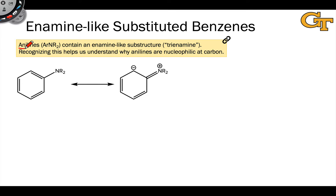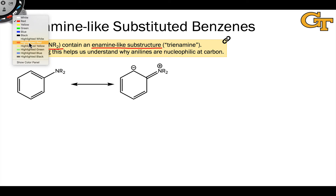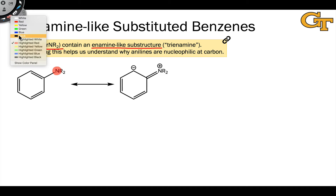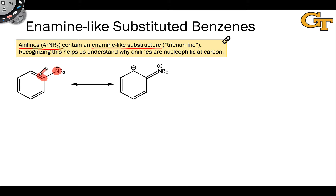Substituted benzenes and aromatic heterocycles — aromatic compounds containing heteroatoms — often contain amine and enamine-like structures within them. For example, anilines are amino-substituted benzenes, and these contain an enamine-like structure within them. If we look at the nitrogen, we can notice that it's adjacent to a carbon-carbon double bond. In fact, it's adjacent to three double bonds all in conjugation.